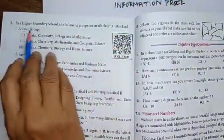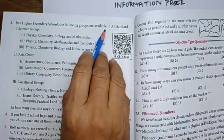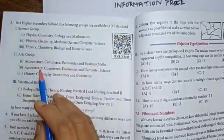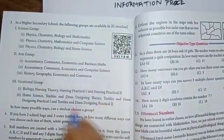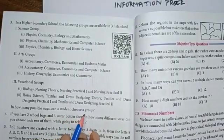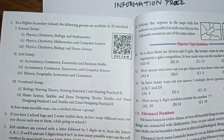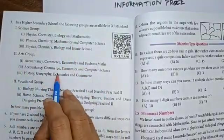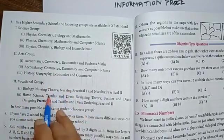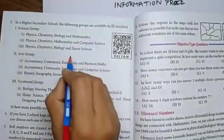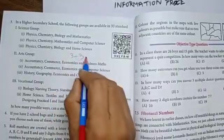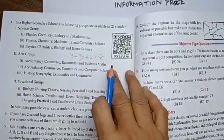Next, this one is the third question. In higher secondary school, the following groups are available in 11th standard. Science group, art group, vocational group. Here 3 groups. Here 3. Here 2. In how many possible ways can a student choose a group? The student either select any one of science or any one of art or any one of vocational only. So, the total possible ways, here 3, here 3, here 2. Equal 8 ways. Understand?